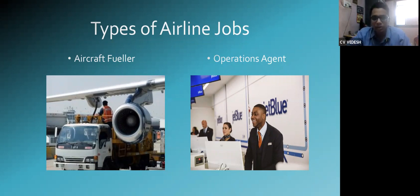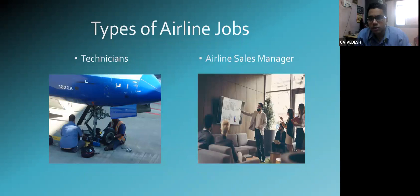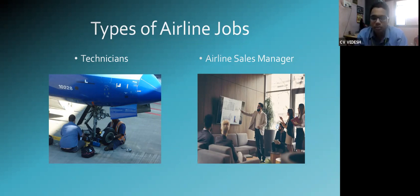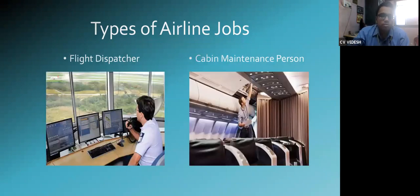Operations agents make sure everything running at ground level is going well. Technicians make sure each and every part of the airplane is in the proper place and there are no incompatibilities. Airline sales managers take data from each airline company and analyze which airline is making a profit, reviewing their sales strategy and coming up with ideas. The flight dispatcher gives instructions on when the flight is available to fly.